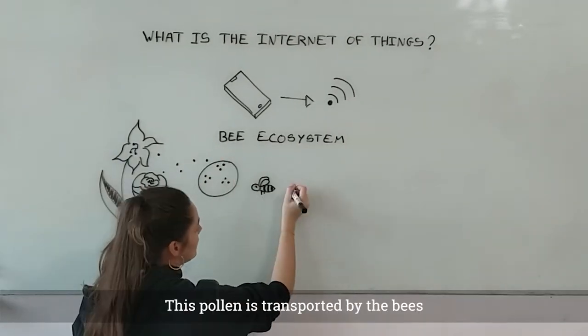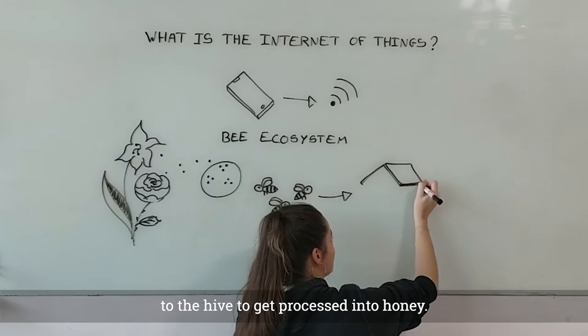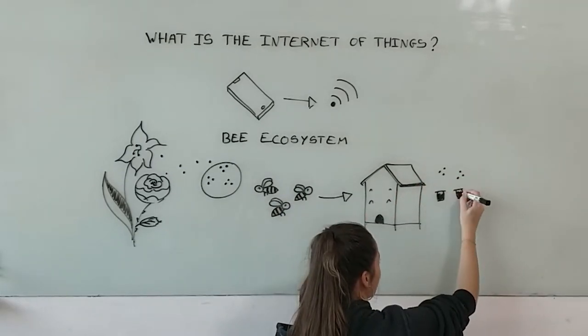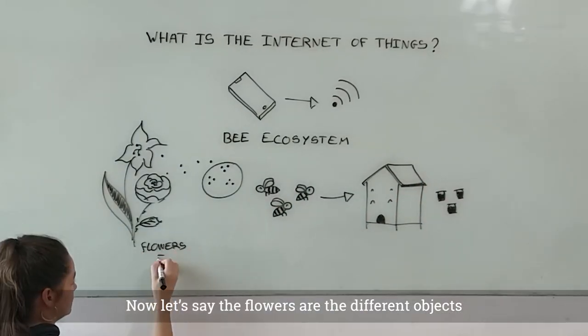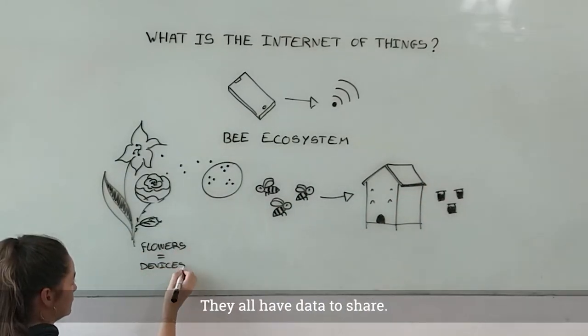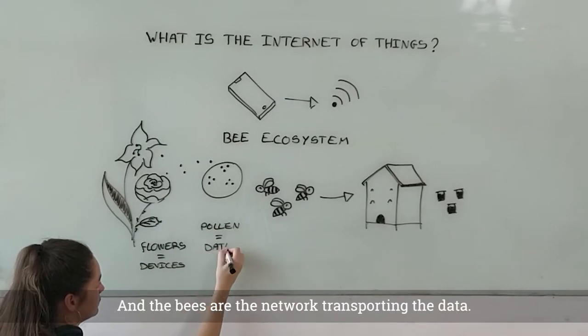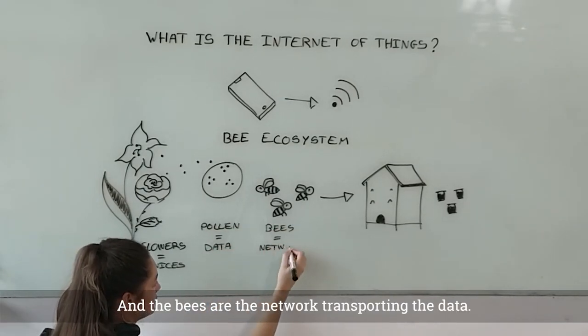This pollen is transported by the bees to the hive to get processed into honey. Now, let's say the flowers are the different objects — they all have data to share, and the bees are the network transporting the data.